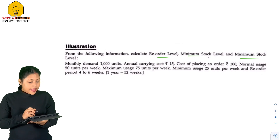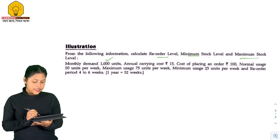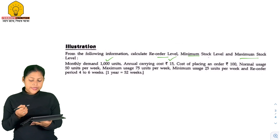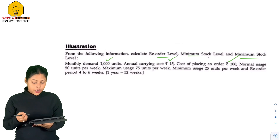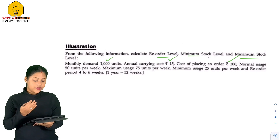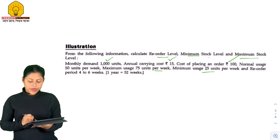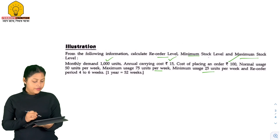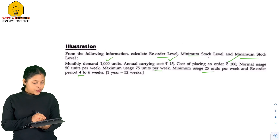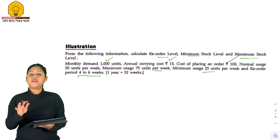I will give you some information. Monthly demand is 1,000 units, annual carrying cost is Rs.15, cost of placing an order is Rs.100. Normal usage is 50 units per week, maximum usage is 75 units per week, minimum usage is 25 units per week, and Reorder Period is 4 to 6 weeks. One year means 52 weeks.